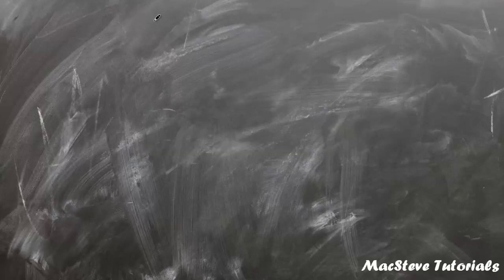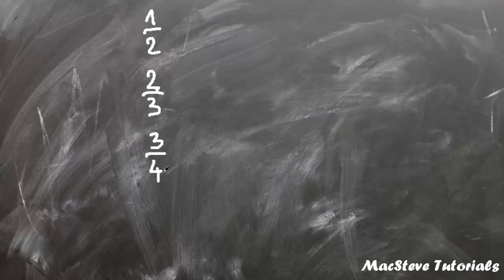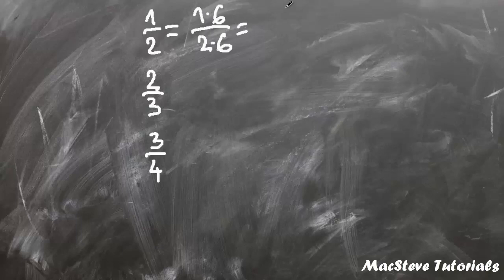Now let's compare 3 fractions: 1 half, 2 thirds, and 3 quarters. 12 is the least common multiple for 2, 3, and 4. So 1 half we multiply by 6 and we get 1 times 6 over 2 times 6, which is 6 over 12. Next, 2 thirds we multiply by 4 and we get 2 times 4 over 3 times 4, which is 8 over 12.